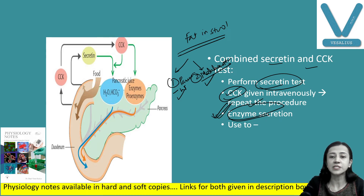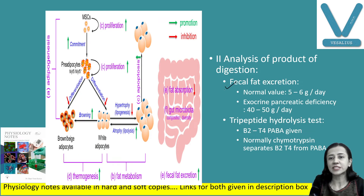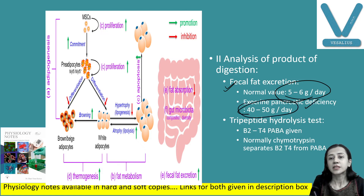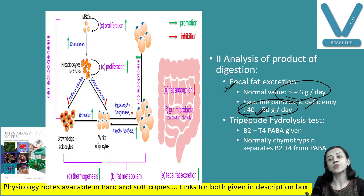The second group of tests is the analysis of products of digestion. One such test is fecal fat excretion. Normally, fat in the stool is only 5 to 6 grams per day. However, if there is pancreatic insufficiency, fat is not digested and therefore not absorbed, resulting in fat excretion of 40 to 50 grams per day.